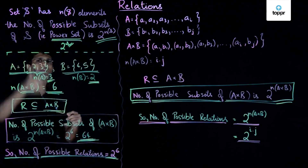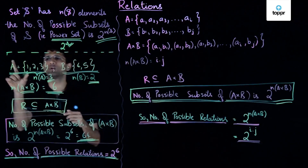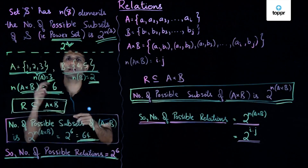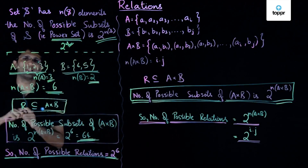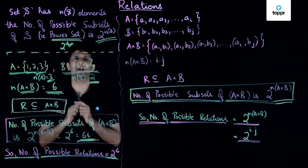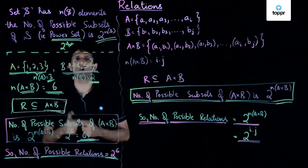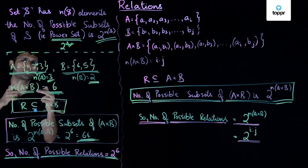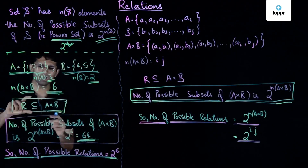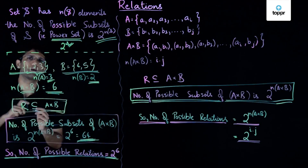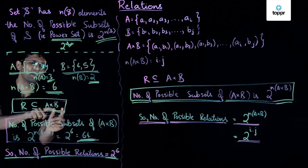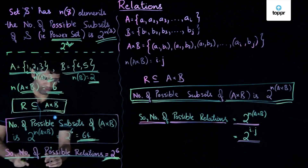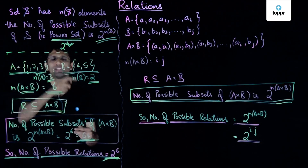To recap: we were given two sets A and B, with A consisting of 3 elements and B consisting of 2 elements. The cardinality of A cross B is 6. Since a set with 6 elements has at most 2 raised to 6 possible subsets, and since a relation is a subset of A cross B, the number of different possible relations between sets A and B is equal to 2 raised to 6.